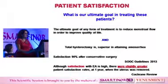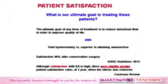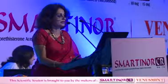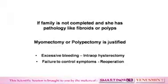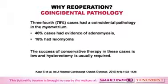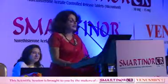The SOGC guidelines in 2013 stated 90% satisfaction for conservative surgery, but although satisfaction with ablation is high, there was slightly greater patient satisfaction at one year when the uterus was removed. If family is not completed and she has pathologies like fibroids and polyps, yes — myomectomy or polypectomy is justified. Regarding re-operation rates: studies found that when you ablate the endometrium, there is a steady increase over time of up to 30% recurrence over four years. Why? Because there may be coincidental undiagnosed pathology, especially adenomyosis in 40% of cases, and conservative therapy will not work.